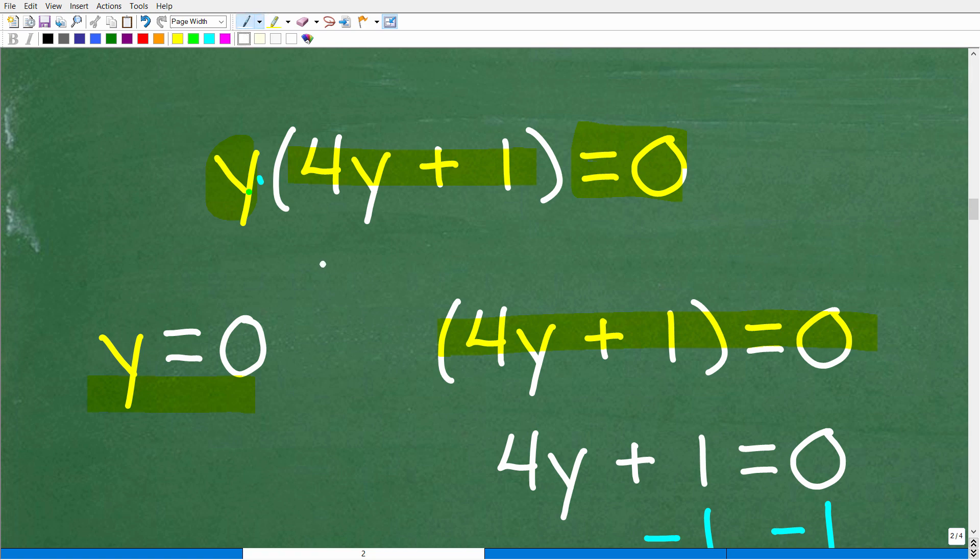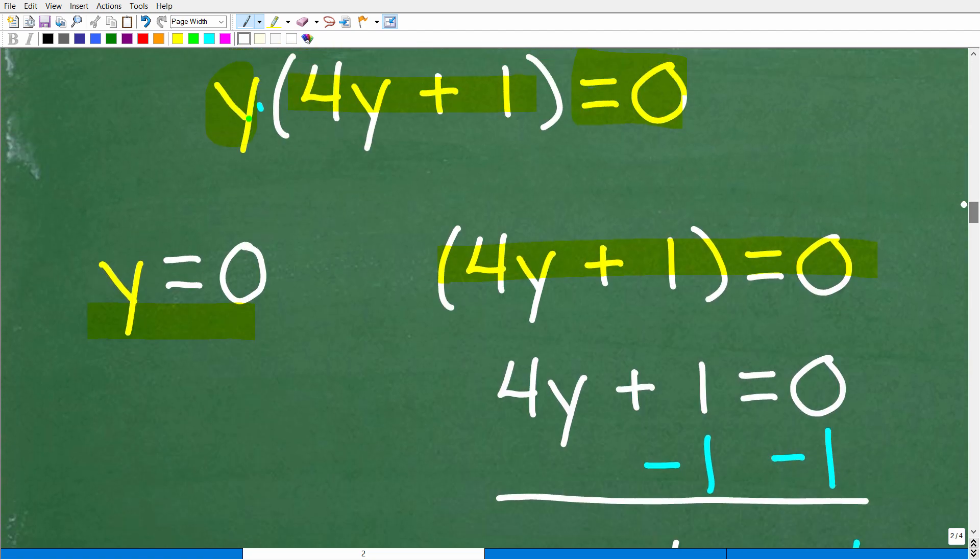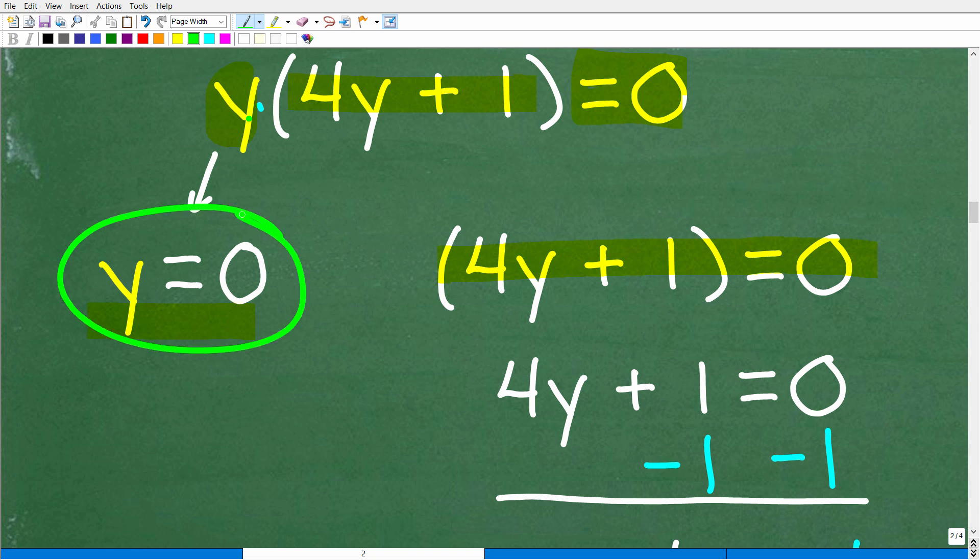So the procedure here is simply to set each factor equal to 0 and solve. All right. So the first thing is y is equal to 0. Well, that's about the easiest equation to solve. There you go. So that is one of our answers, right? So y is equal to 0.